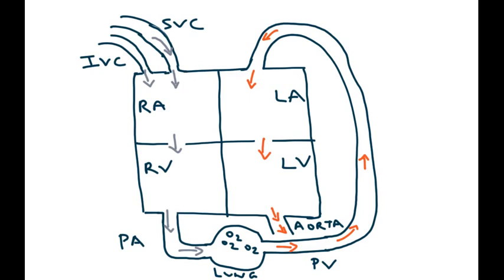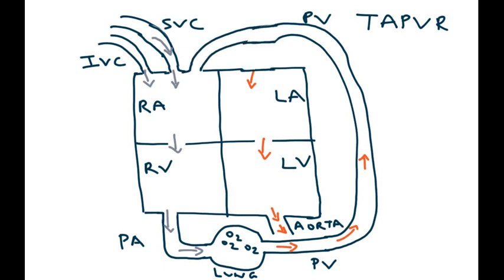So what is the scenario in total anomalous pulmonary venous return? What happens in this congenital heart defect is that the pulmonary veins, which are right here, are not draining into the left atrium. Instead, they drain into the right atrium. So the oxygenated blood comes back into the right atrium and mixes with the deoxygenated blood that has come back from the circulation.